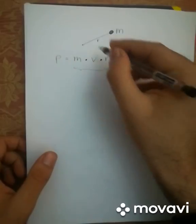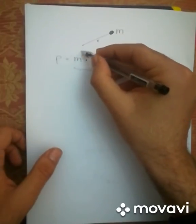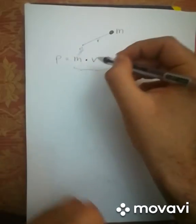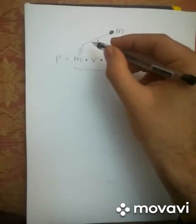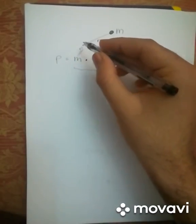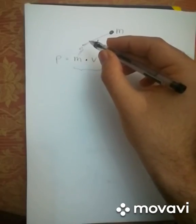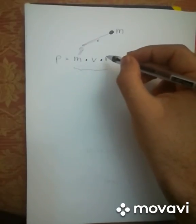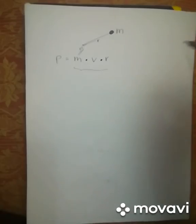If for example I have my arm right here and I'm rotating this ball, what happens if I reduce the size of r? Will anything happen to the velocity of the ball? Will it increase or will it decrease?